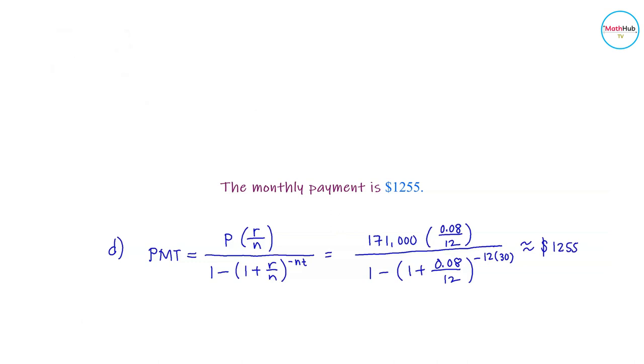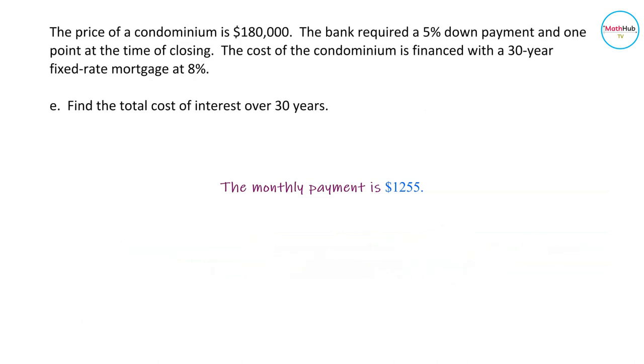Lastly, we want to find the total cost of interest over 30 years. To do this, we will compute first the total amount paid for the loan. The total amount paid is the monthly payment multiplied by the number of years and the number of paying periods.